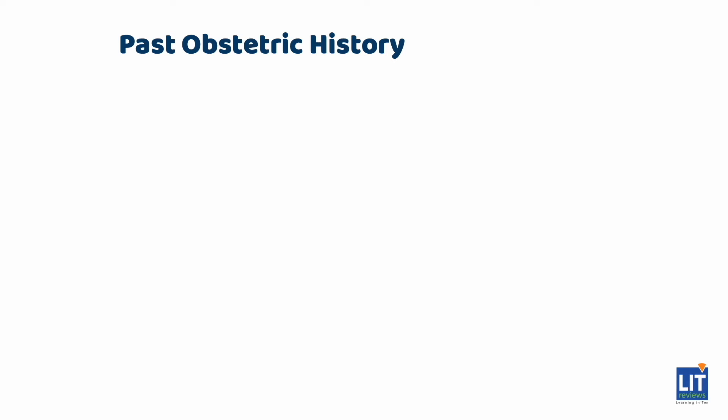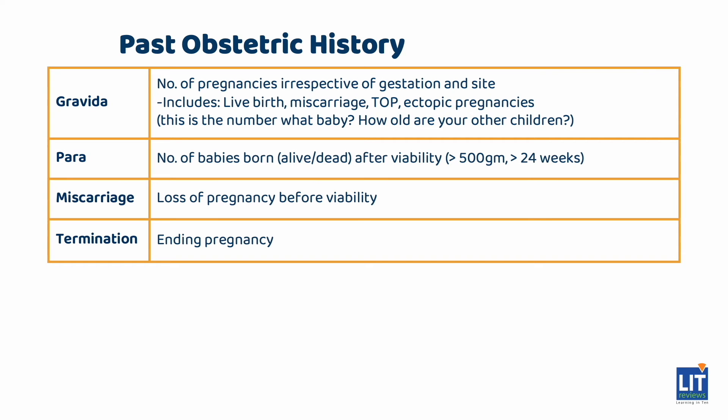Now let's move on to the past obstetric history and the obstetric code. There are a few terminologies peculiar to obstetrics, which is the G and P status of the mother. G stands for gravida, meaning the number of pregnancies irrespective of gestation and site. Please do not mention the word gravida when the person is not pregnant. For example, a person presenting with a gynecological problem who has had two children in the past would just be para 2. But a person who is currently pregnant and has had two children in the past would be gravida 3, para 2. This includes live births, miscarriages, terminations of pregnancy, and ectopic pregnancies.